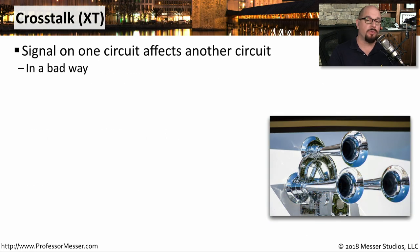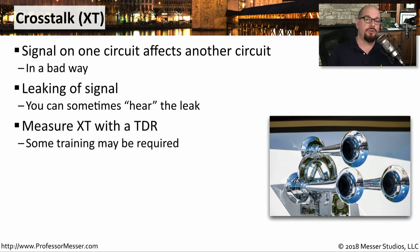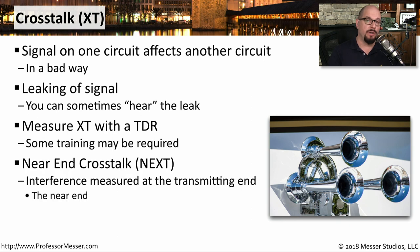Crosstalk is when signal that's going across one pair of wires is affecting the signal on another pair of wires. This leaking of information from one wire to the other causes interference and may affect the overall performance of a connection. One good way to measure how much crosstalk you're having on a particular pair of wires is with a time domain reflectometer. One of these readings may be near-end crosstalk, or NEXT — this is how much crosstalk is occurring as the signal is at the near end, the side that is transmitting that signal.